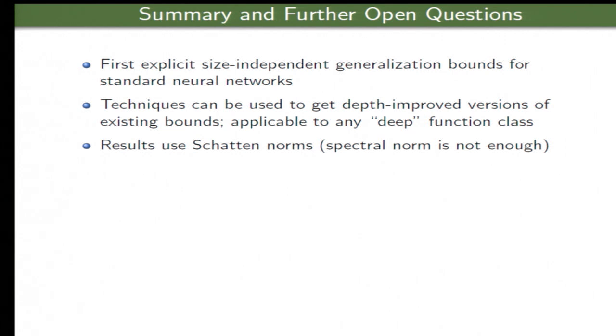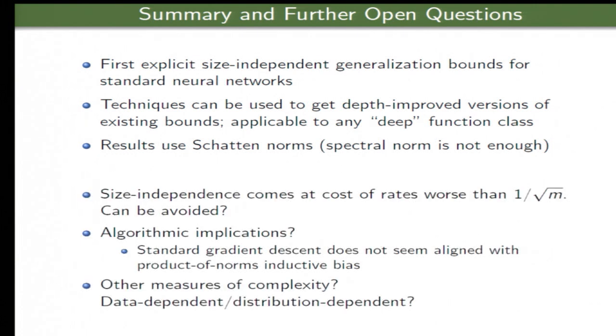So the summary. These are the first known to us explicit size independent generalization bounds for standard neural networks. Techniques can be used more generally. You can take other results and try to improve them. We've done that in the paper. Schatten norms are required. Spectral norm is not enough, as that lower bound shows. And there are many questions. The obvious one is whether one can get the one over square root of M behavior or whether this M to the one-fourth is necessary. I don't believe that's the case. Clearly, you know, the standard gradient descent is not compatible with this type of product of the norms. So are there any algorithmic implications for this measure of complexity?